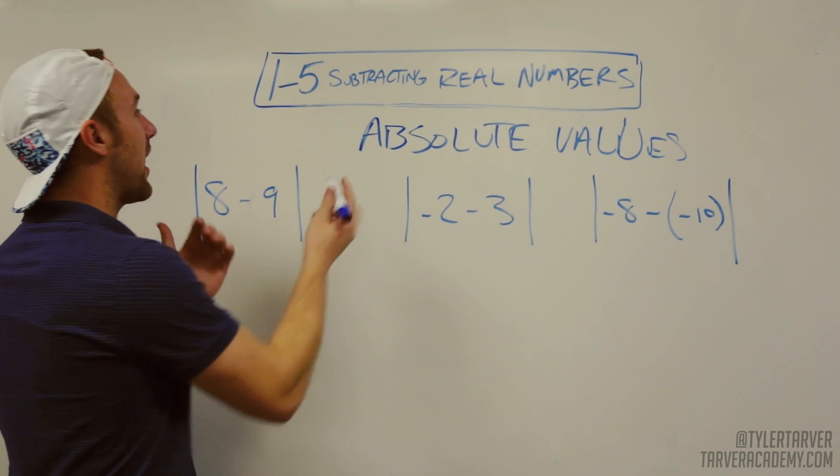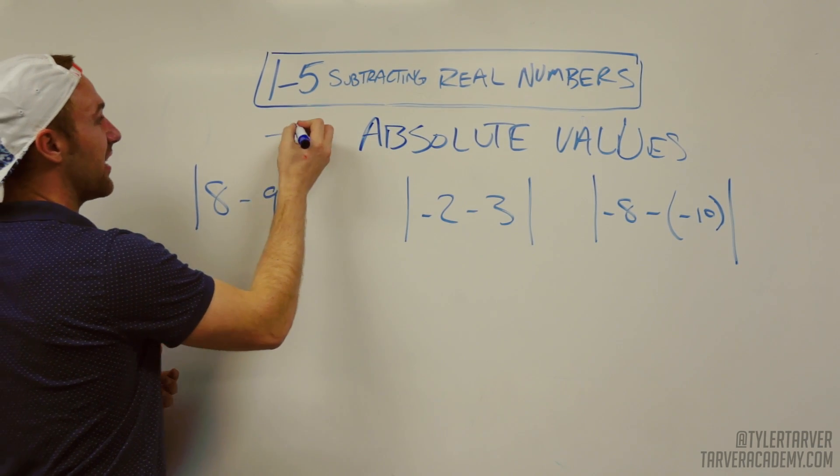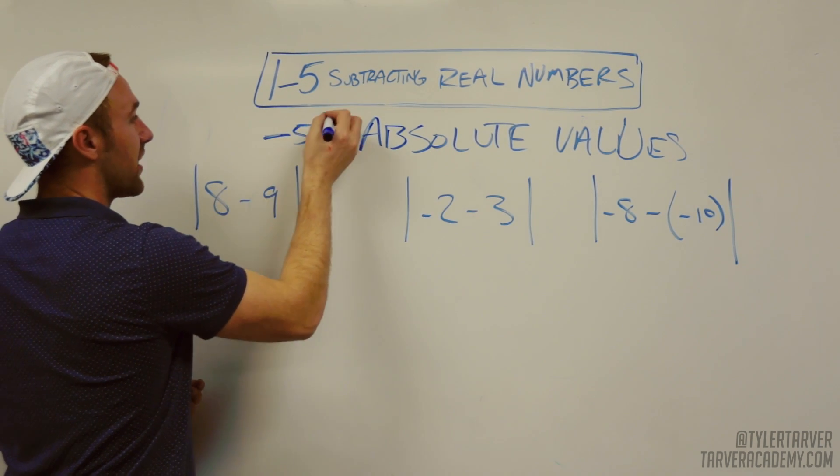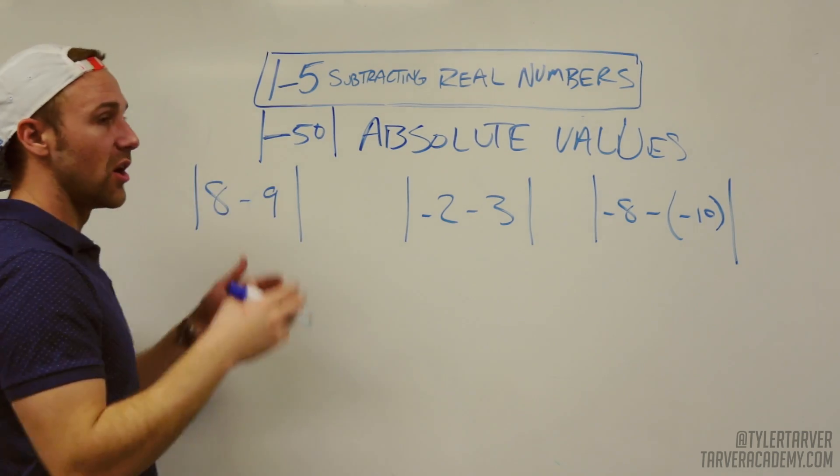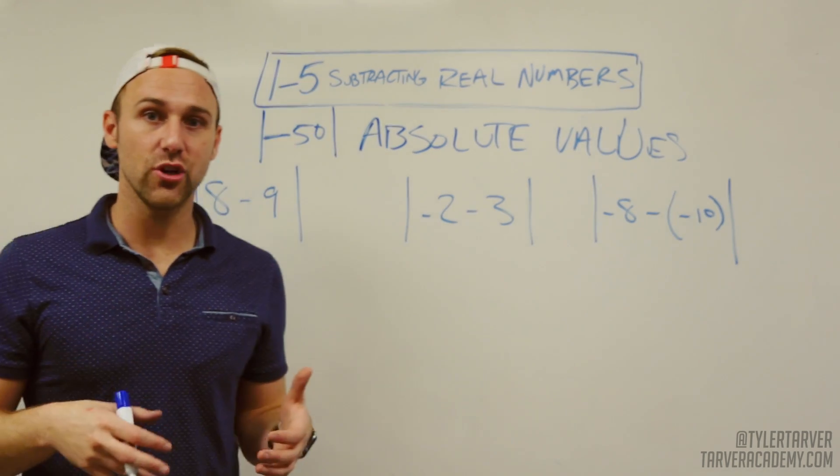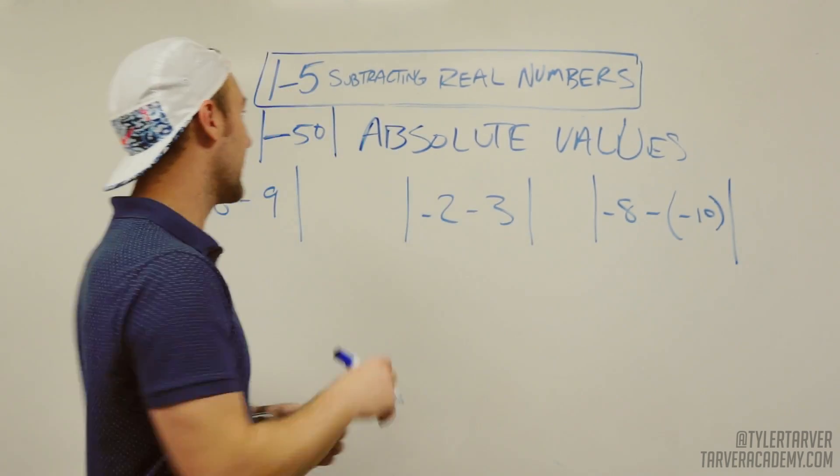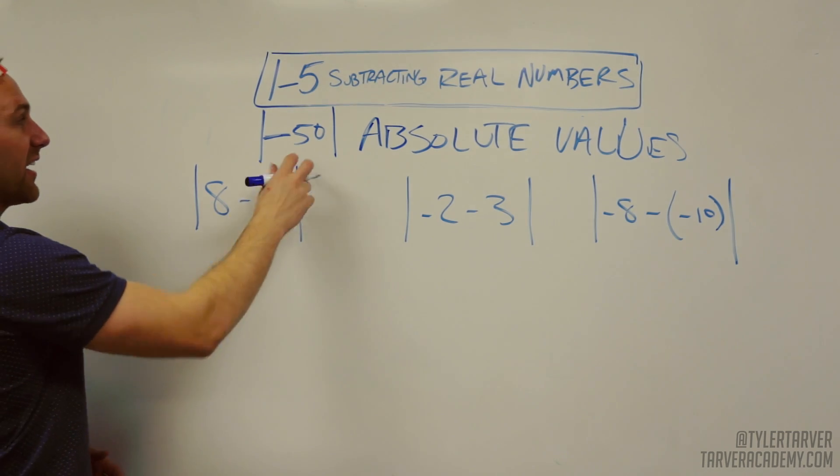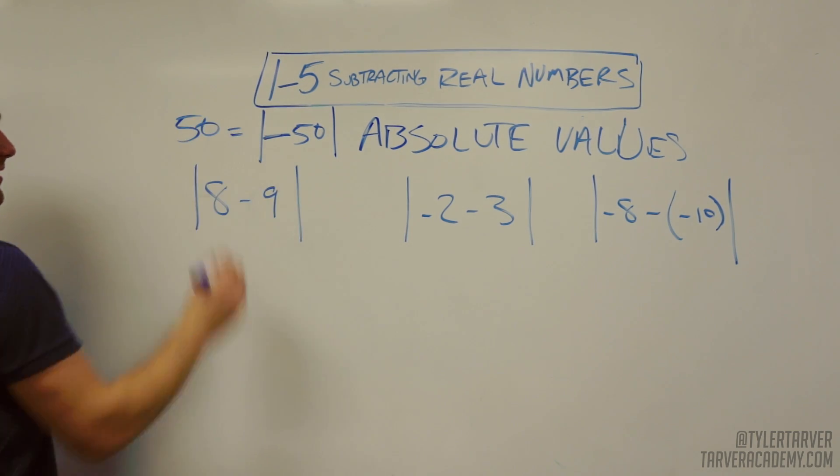So essentially what that means is if you have like a negative 50 and you cover it with absolute values, the absolute value signs destroy that negative. So the absolute value of negative 50 is positive 50.